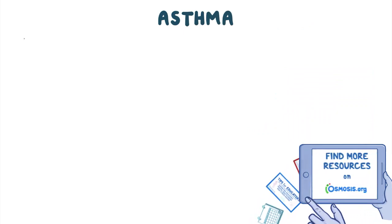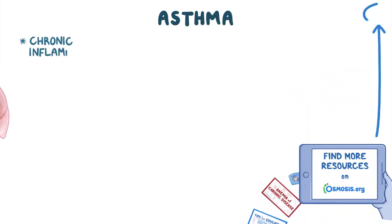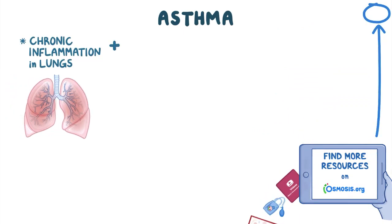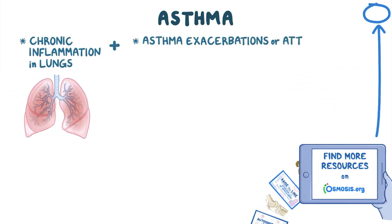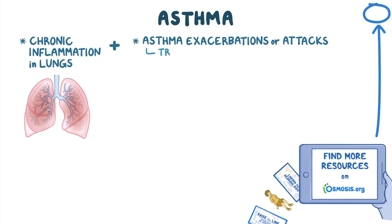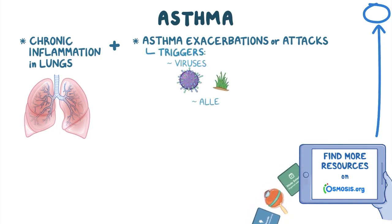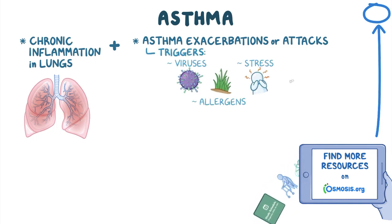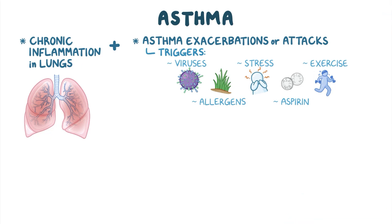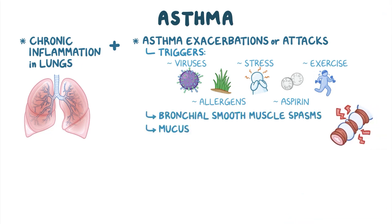Asthma is characterized by chronic inflammation in the lungs, as well as asthma exacerbations or attacks, where certain triggers such as viruses, allergens, stress, aspirin, and exercise lead to reversible bronchial smooth muscle spasms and mucus production, both of which make it hard to breathe.